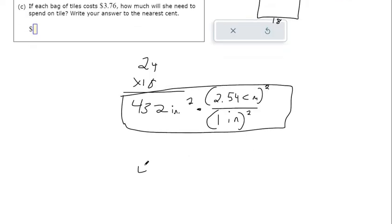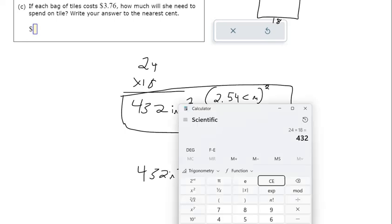We've got 432 square inches still. We haven't cross canceled them yet. And up top, I've got to square that 2.54 in order to make this. That's 6.4516.